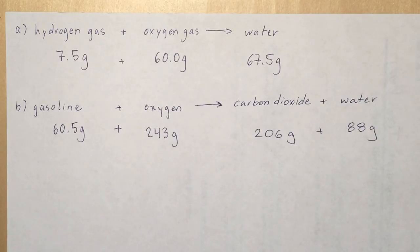So hopefully you can see in the first reaction, we have hydrogen gas and oxygen gas as our reactants. And if we add up the total mass of those two reactants, we get 67.5 grams.